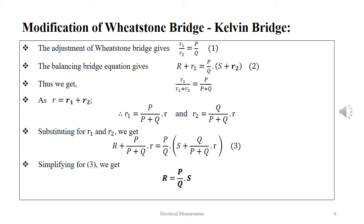Evaluating further, r1/(r1 + r2) = P/(P+Q). Since r = R1 + R2, r1 = r × P/(P+Q) and R2 = r × Q/(P+Q). Substituting these values and simplifying, the final expression obtained is: R = (P/Q) × S.